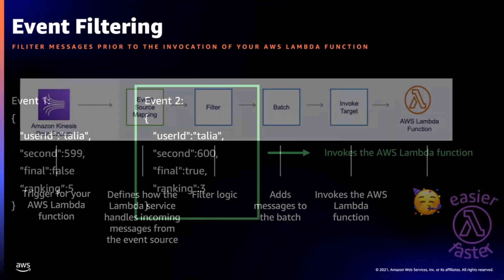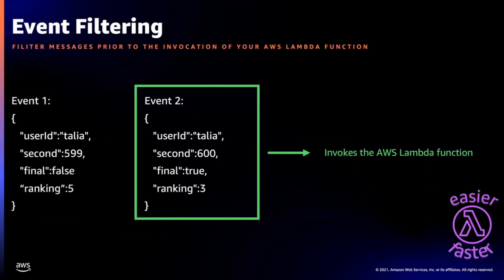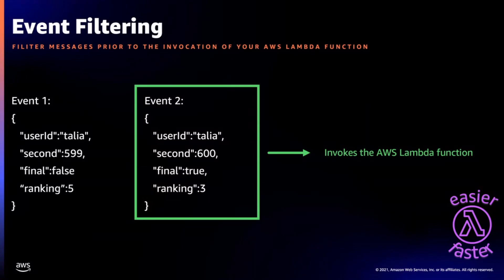The Lambda service filters messages received from the event source before batching and sending them as the payload. For example, in a Peloton race with 600 seconds of riding, at every second each person has a ranking update. But you only care about the final ranking. So during the ride, events stream to Lambda, but Lambda only wakes up for the final event. Event filtering makes serverless development easier — you specify exactly what the function should respond to — and faster because Lambda is only invoked when needed.